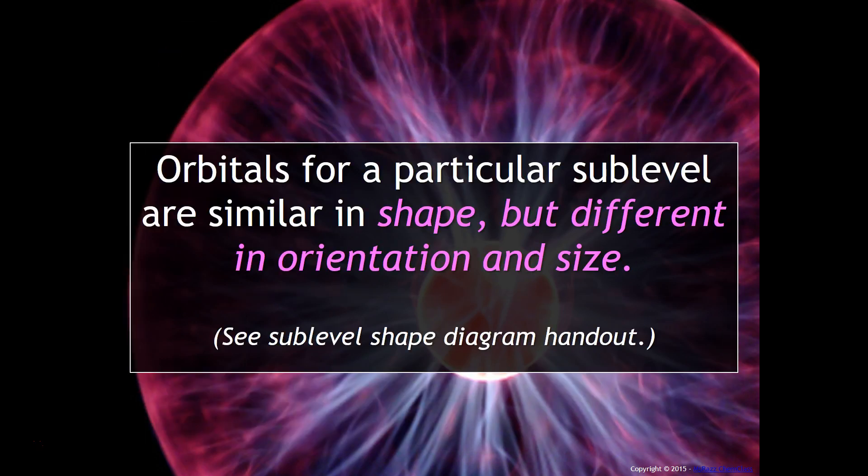Orbitals for a particular sublevel are very similar in terms of their shape, but different in terms of their orientation and size. You should have been handed a sublevel shape diagram in class. It's very important that you take a look at that to see what I'm talking about.